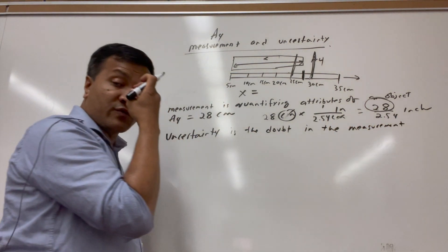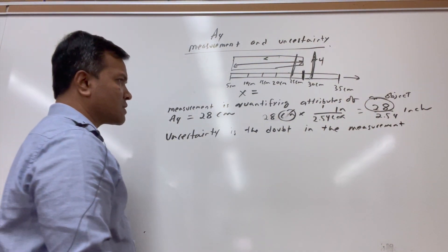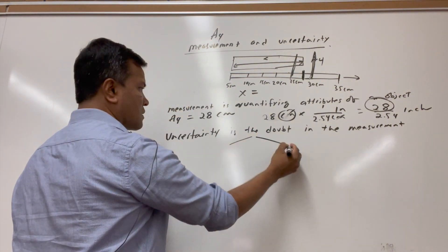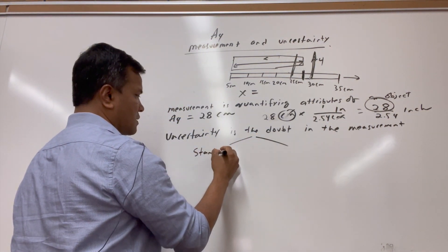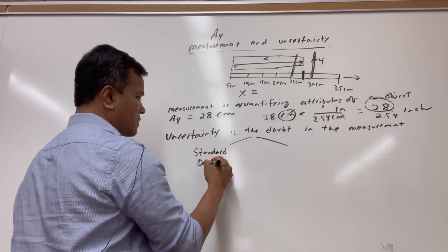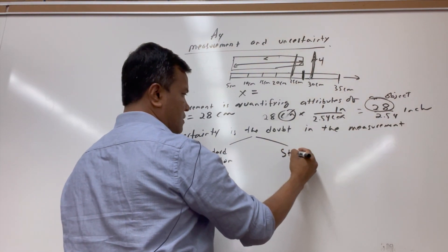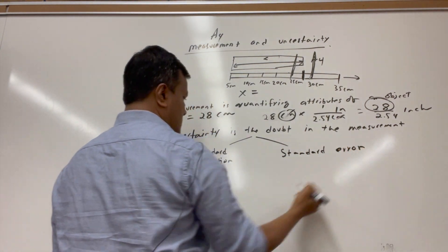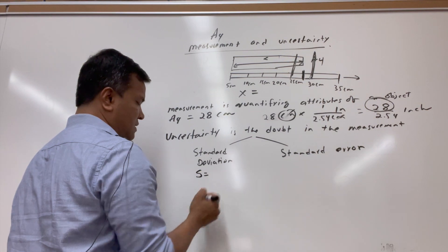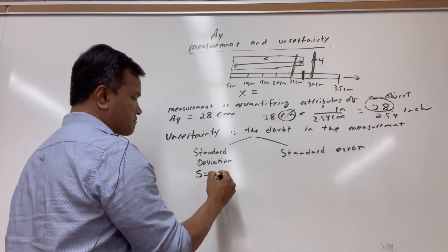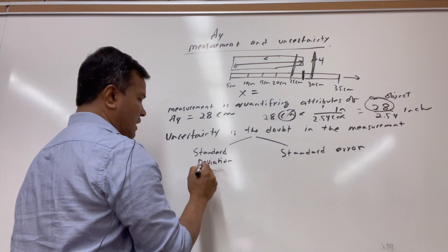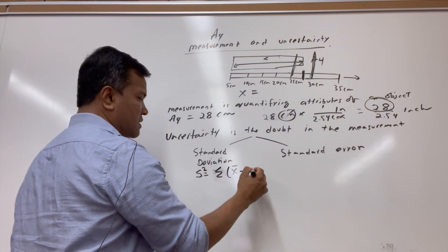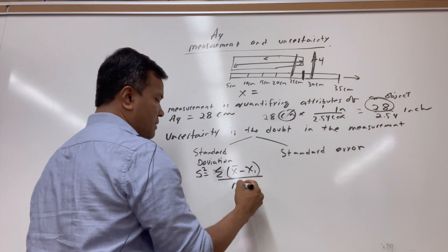There are two ways to address uncertainty. One is standard deviation. The other one is standard error. The standard deviation formula is: S squared equals sigma of (x-bar minus x_i) squared, over n minus 1.